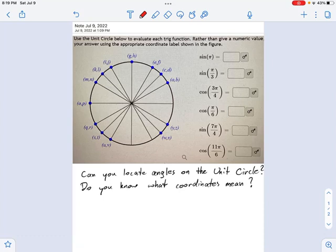This will be a very quick problem. There's two questions that I want to ask you. One, can you locate angles on the unit circle? And two, do you know what those coordinate points mean? That's it. So I'll show you what I mean by this.